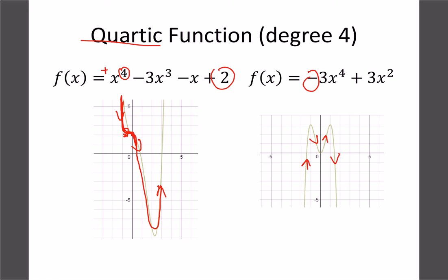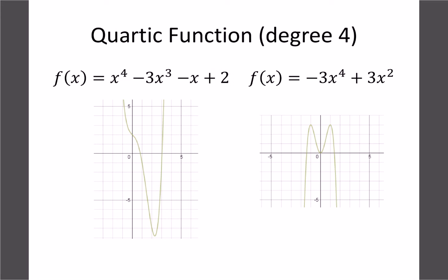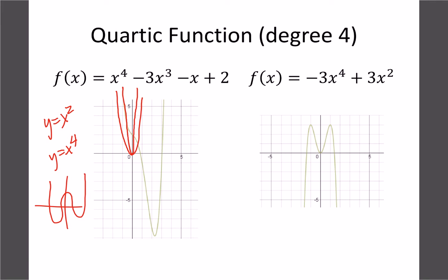The trick with these graphs is you're not always going to see all four turns clearly. For example, if you graph y equals x to the fourth, it looks just like a quadratic — both y equals x squared and y equals x to the fourth are similar, just one is skinnier. A normal x to the fourth equation might look like a W but could also look more like a U shape.